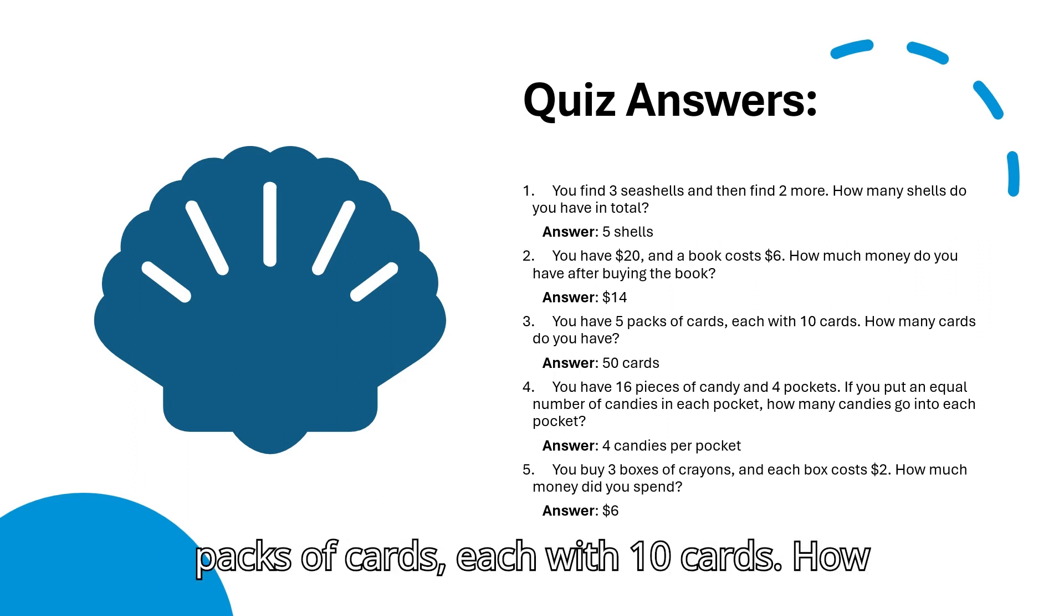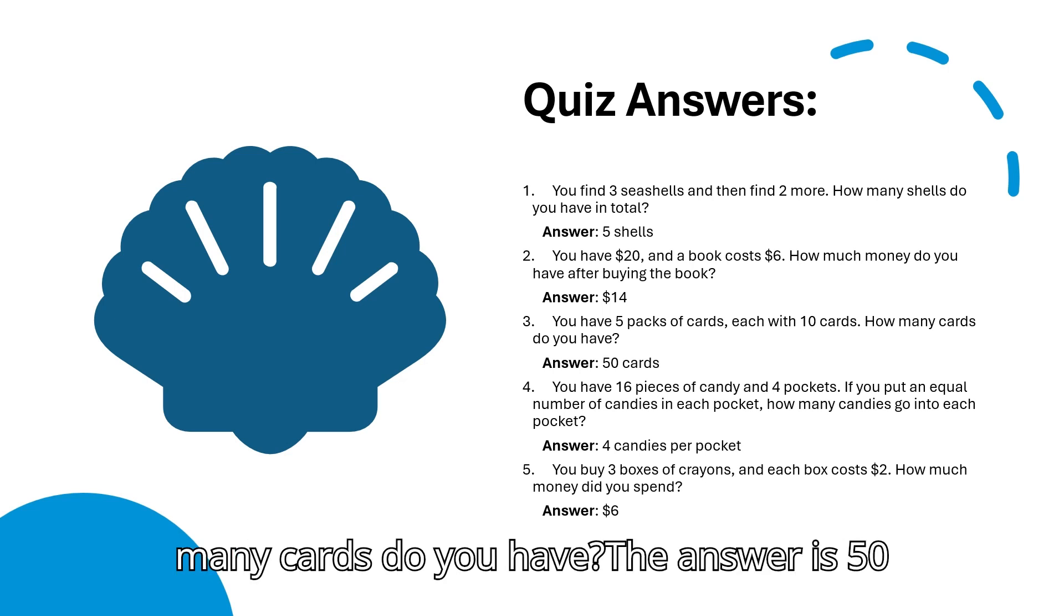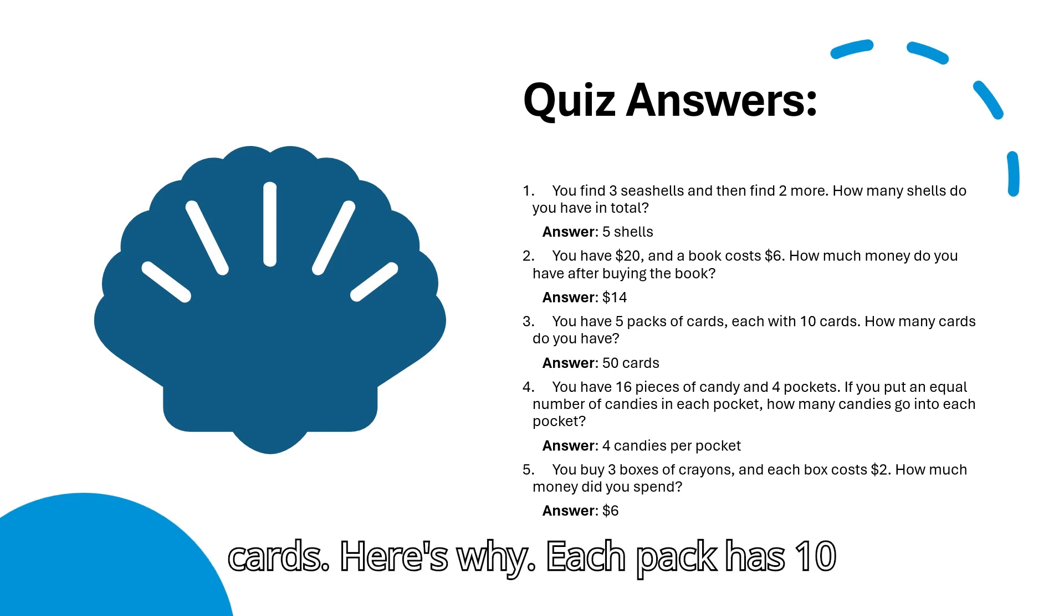Question 3: You have 5 packs of cards, each with 10 cards. How many cards do you have? The answer is 50 cards. Here's why. Each pack has 10 cards, and since you have 5 packs, you multiply 5 by 10, which equals 50. So, you have 50 cards in total.